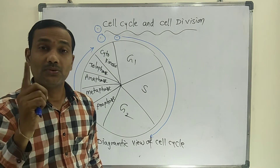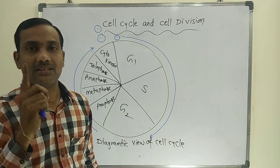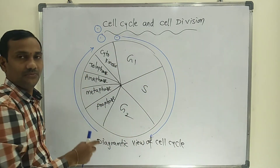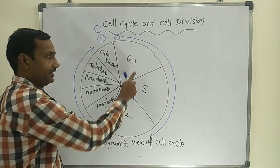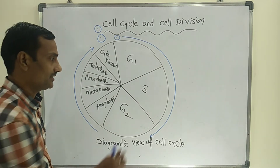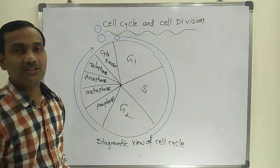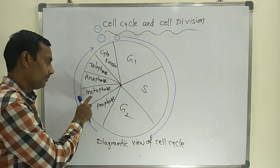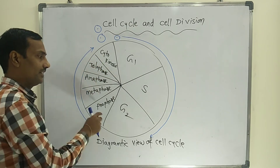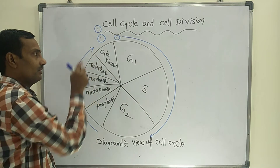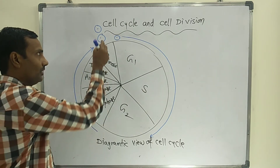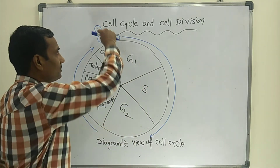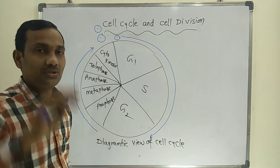Every cell during cell division — that is mitosis — must pass through all these sub-phases: G1, S, G2, then M phase with prophase, metaphase, anaphase, telophase, and cytokinesis. Karyokinesis and cytokinesis together are called M phase. At the end of cytokinesis, two cells are formed, and again these two cells enter into the cell cycle, forming four cells.